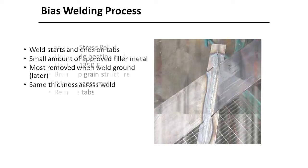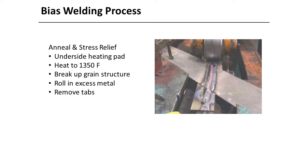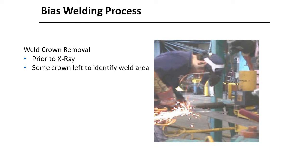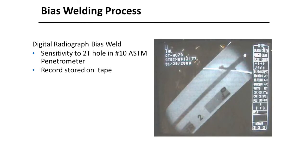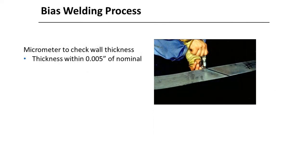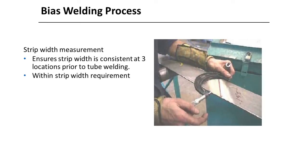Welding creates a heat affected zone which acts as a stress riser when bending pipe onto the drum; this stress is relieved by heating the welded area. A grinding wheel removes the excess weld bead from the top and bottom of the strip. All bias welds are x-rayed and approved by a quality control specialist. Dimensions are checked — thickness should be within 0.005 inch of nominal, and strip width is verified at three locations prior to tube welding.